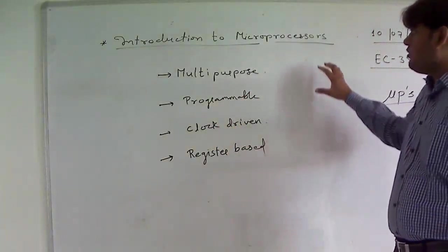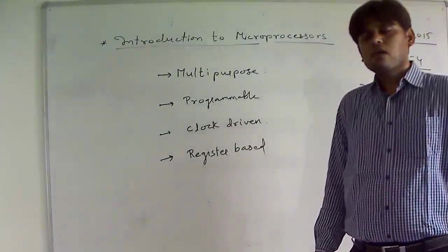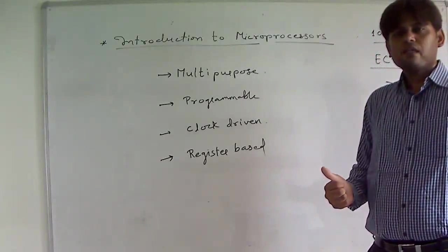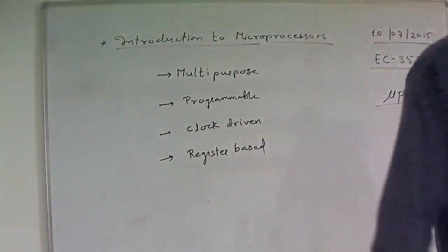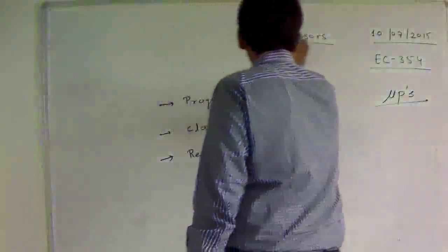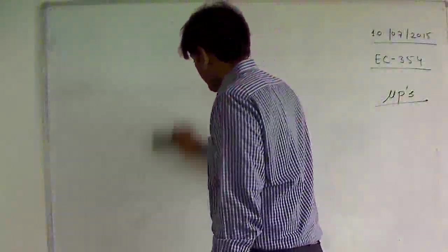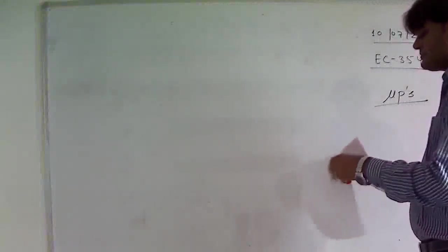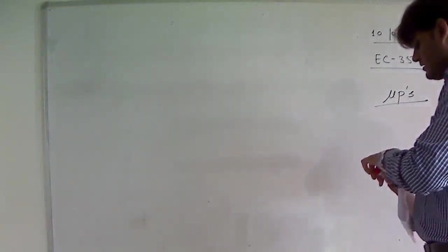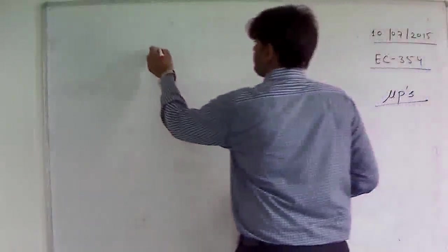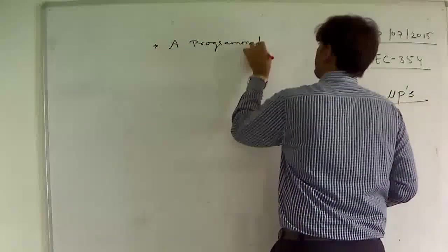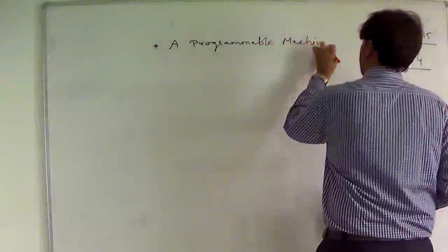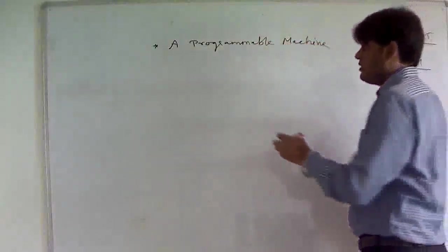After going through the definition, let us start discussing a simple programmable machine. A simple programmable machine comprising of a microprocessor, input devices, output devices, and memory.